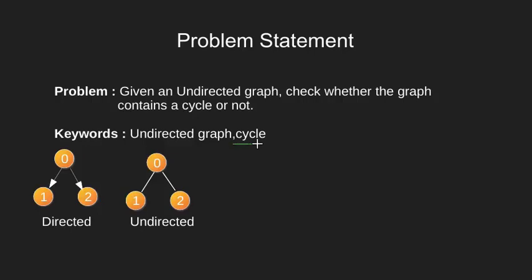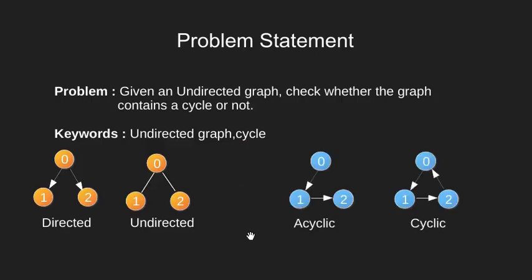The next term we used was a cycle. What do we mean by a cycle in a graph? A cycle is basically a closed path where we have a sequence of nodes starting and ending on the same node. Here we have an acyclic and a cyclic graph. In the cyclic graph, we have a cycle — if we start from 0, we come back to it after going through nodes 1 and 2. However in the acyclic graph, if we start from 0, it goes to 1, then 2, and there is no path that leads back to node 0. That is, in this graph we do not have a cycle.